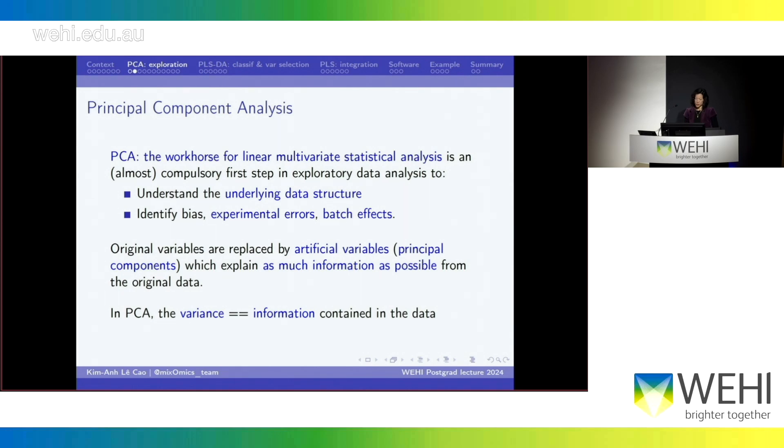So in PCA, what we do is we replace the original variables, so the parameters we measure, by new variables, and I'll show you how we do that. And those new variables are called principal components. And those principal components are supposed to summarize as much information as possible from your original data set, but in a much reduced dimensional space.